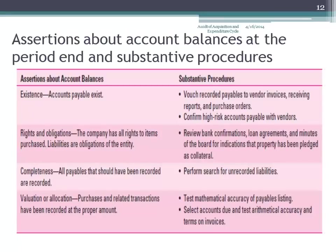A substantive procedure would be to just vouch the recorded payables to vendor invoices, receiving reports, and purchase orders. Because if we order goods, we're going to debit inventory and credit accounts payable. So if we have a receiving report that matches the purchase order and ties to the vendor invoice, that way we know that a liability exists because we recorded the receipt of that item.